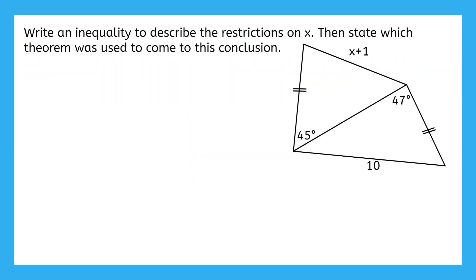Our first example says, write an inequality to describe the restrictions on x. Then state which theorem was used to come to this conclusion. This may seem a bit overwhelming, but one of the theorems we just talked about will help us relate these two triangles to each other. If we want to use the hinge theorem, or its converse, we know that we need to have two congruent sides. Pause the video here, and try to figure out how one of these theorems could help us.